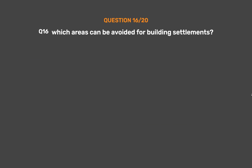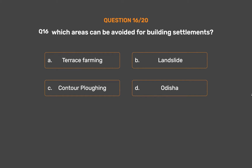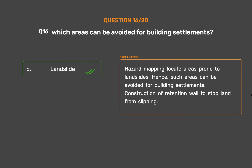Question No. 16. Which areas can be avoided for building settlements? Option A: Terrace farming. Option B: Landslide. Option C: Contour plowing. Option D: Odisha. The correct answer is Option B: Landslide. Hazard mapping locates areas prone to landslides; hence such areas can be avoided for building settlements. Construction of retention walls can stop land from slipping.